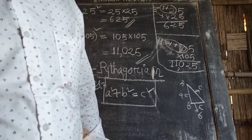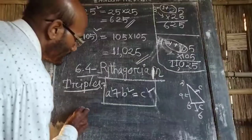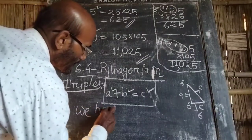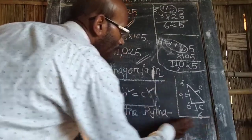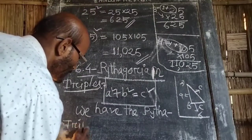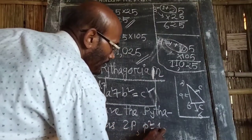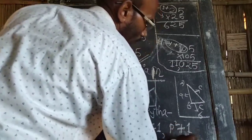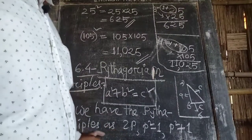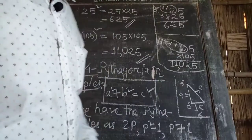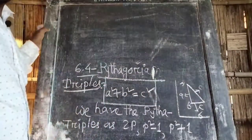The Pythagorean tuples are formed as: twice p, p squared minus 1, and p squared plus 1. Using this form, we can find the Pythagorean triples. Now for Exercise 6.2.